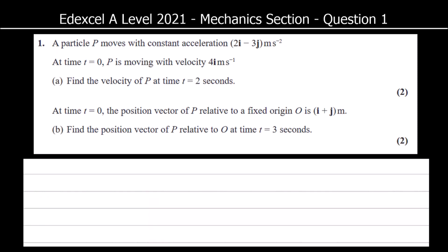A particle P moves with acceleration 2i minus 3j meters per second squared. At time t equals 0, P is moving with velocity 4i meters per second. Part A says find the velocity of P at time t equals 2 seconds.